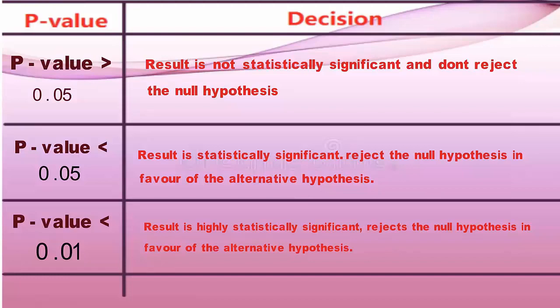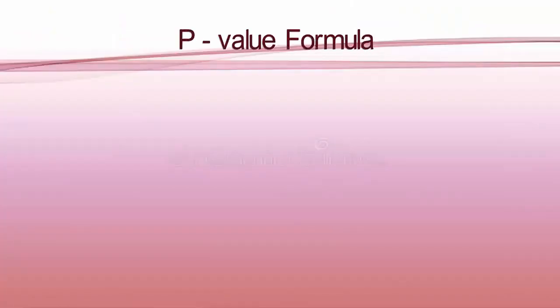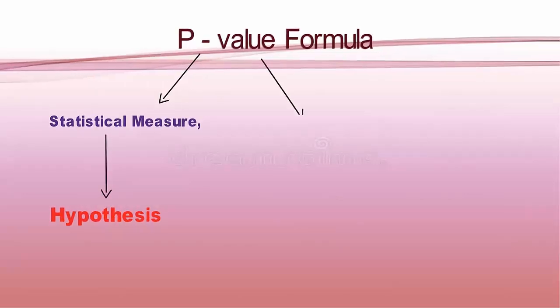We know that P-value is a statistical measure that helps to determine whether the hypothesis is correct or not. P-value is a number that lies between 0 and 1. The level of significance, alpha, is a predefined threshold that should be set by the researcher. It is generally fixed as 0.05.